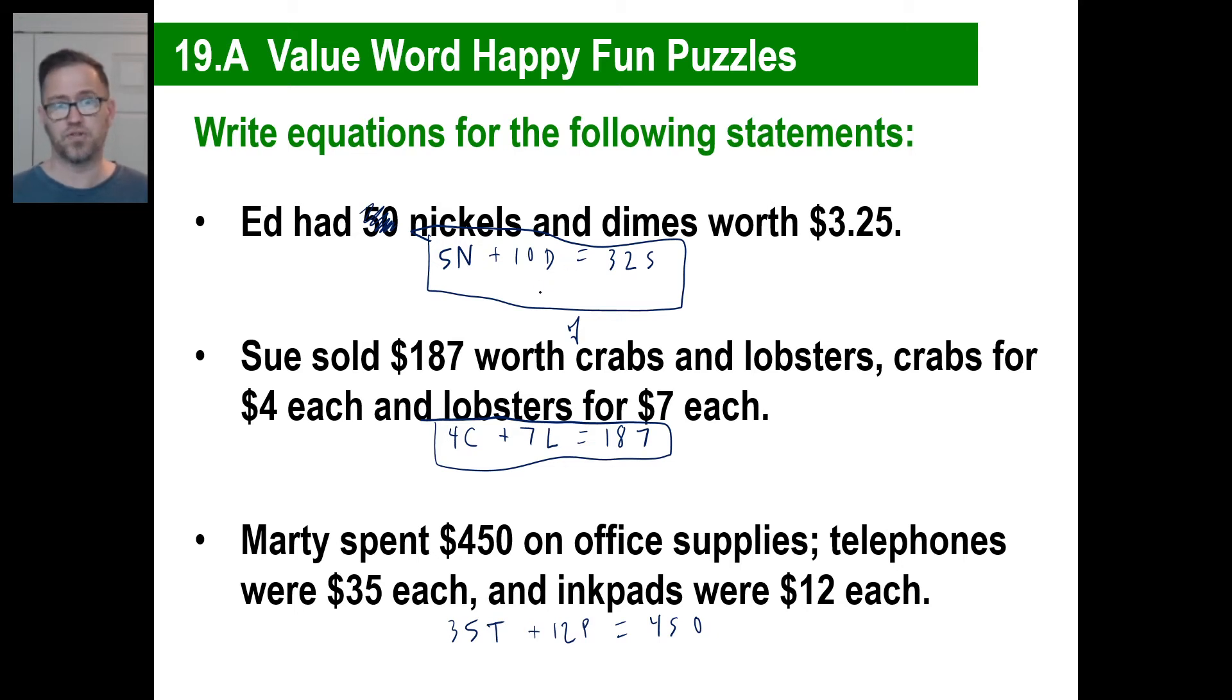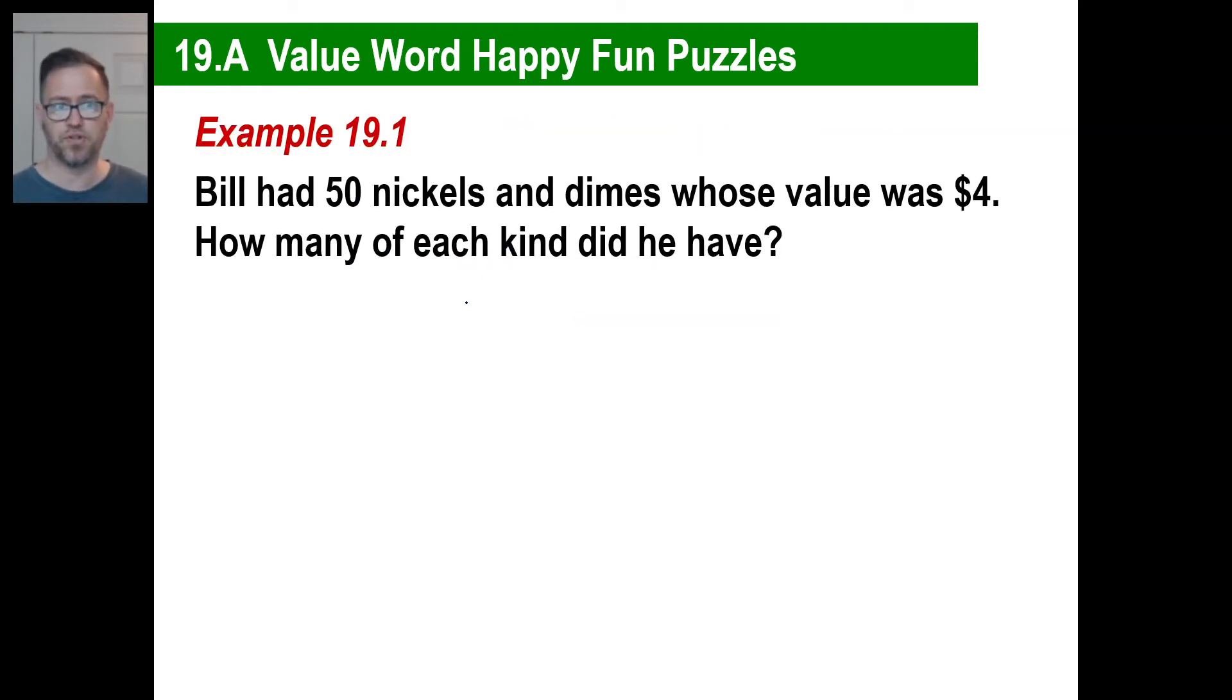To do an equation or to solve variables that there are two of them, you have to have two equations. Remember how we've done substitution and elimination? We had to have, you know, 2x plus 3y equals 12, 8x minus 7y equals negative 4. You have to have two equations with two variables. That's what we're going to do with these. We're going to make up two equations based on a short little paragraph that your book presents to you.